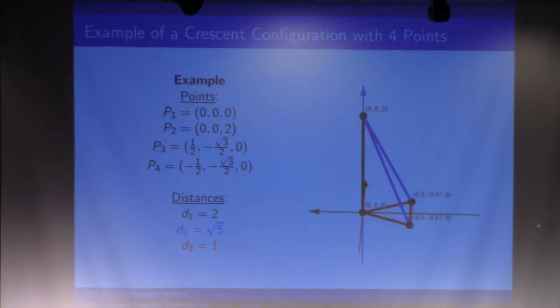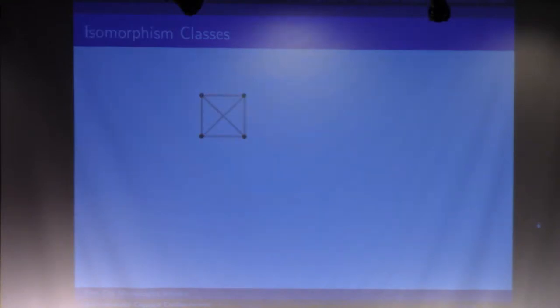One of the questions we're really interested in is how many of these can we find. What we did was start with a complete graph, and then we asked, how many ways can I place three edges with length d₃? It ends up being three different ones. You can permute all the different possibilities, but they all end up looking like this eventually.